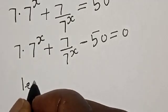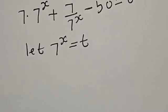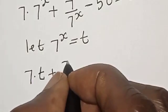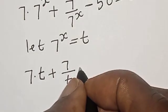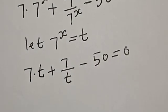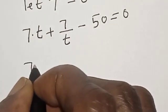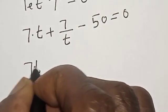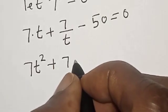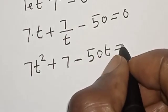Now, let 7 raised to the power s equal to t. If that is the case, we have 7 multiplied by t plus 7 divided by t minus 50 is equal to 0. Now let's multiply all through by t. We will have 7t squared plus 7 minus 50t is equal to 0.